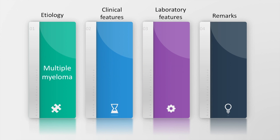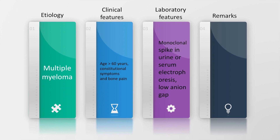Multiple myeloma may also cause AKI. Clinical features include an elderly male or female with constitutional symptoms and bone pain. Laboratory features include an M-spike on urine or serum electrophoresis and a low anion gap. Diagnosis of myeloma requires bone marrow and renal biopsy.